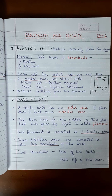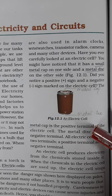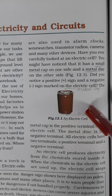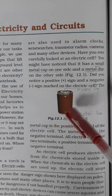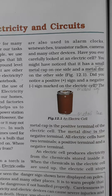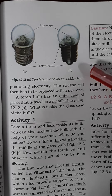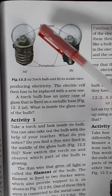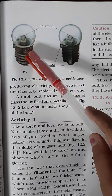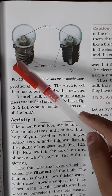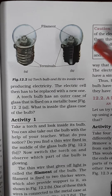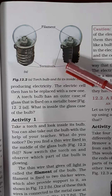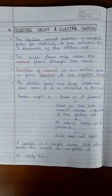You can also see the diagram in the NCERT book. The electric cell diagram shows a metal cap and a metal disc as its two terminals — positive and negative. The second diagram shows the outer case of the bulb with the metallic base, the filament in the middle, and the two terminals: the metal tip and the base of the bulb.